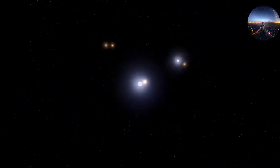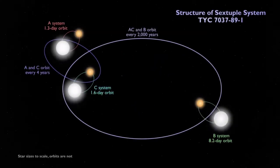This schematic shows the configuration of the sextuple star system TIC 7037-89-1. The inner quadruple is composed of two binaries A and C, which orbit each other every four years or so. An outer binary, B, orbits the quadruple roughly every 2,000 years.